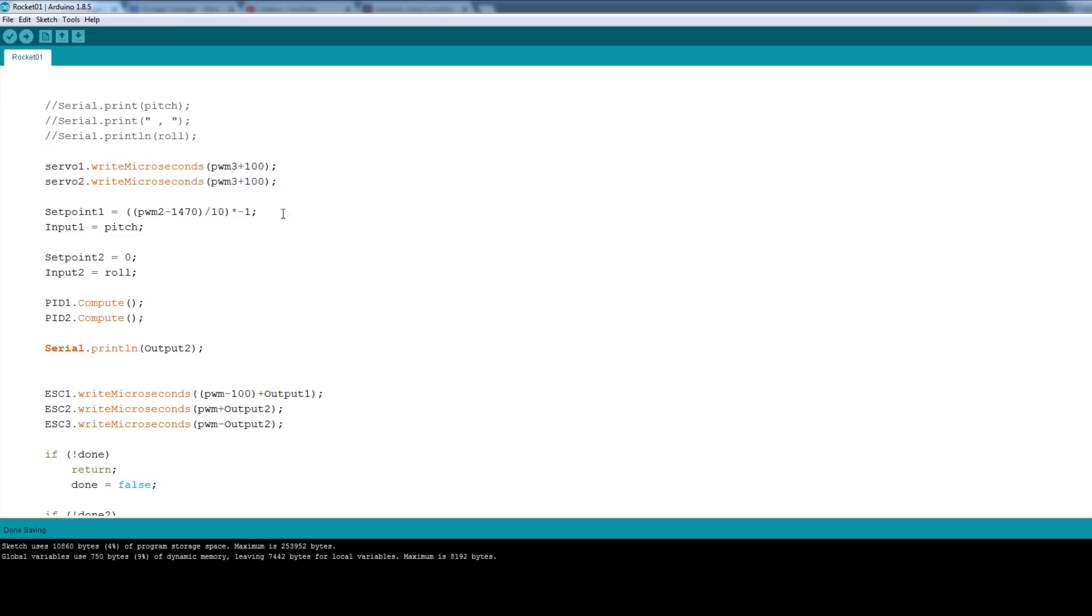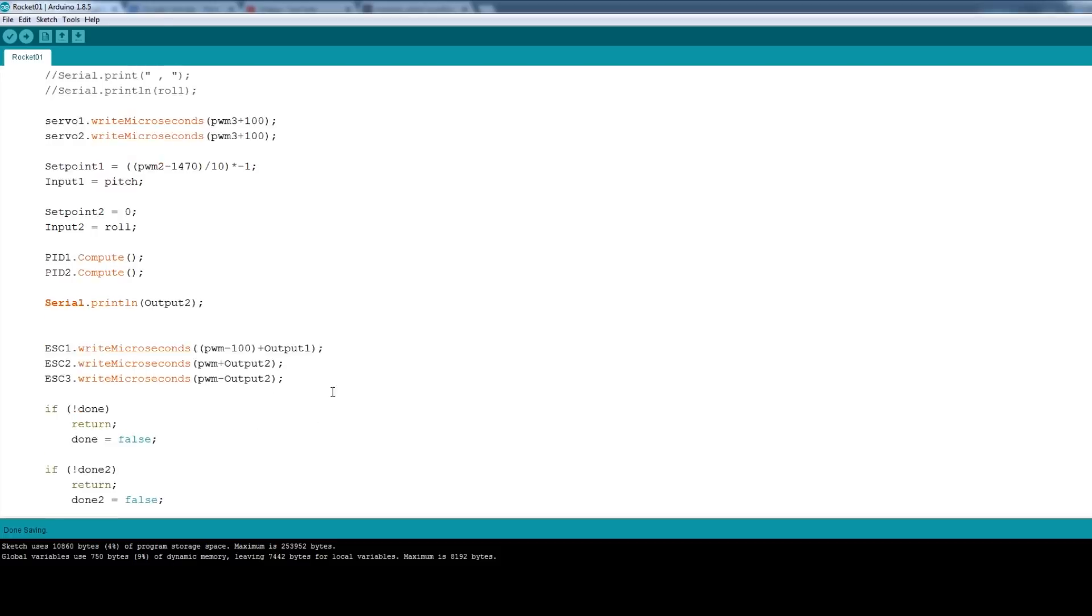The other two do a very similar thing, only their set point is currently zero, so I've got no manual trim over that at the moment. And the output, basically, is added to one of those PWMs, for one of the ESCs, and taken away from the other. So, obviously, when there's a negative value, that reverses, so as the rocket leans from left to right, one of those ESCs will go faster, and one will go slower to try and compensate, but we still need to tune up those values.